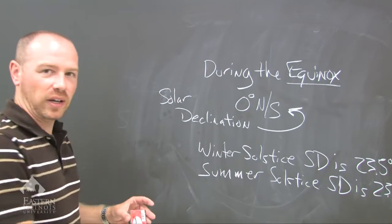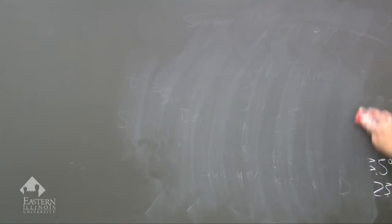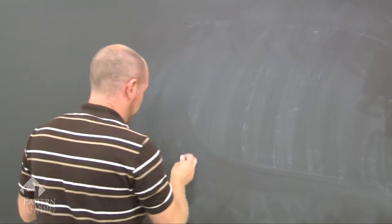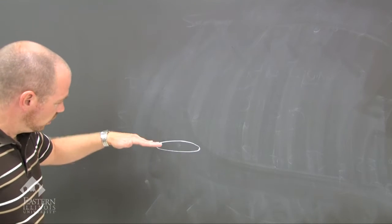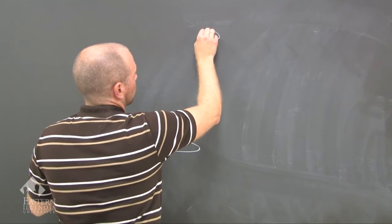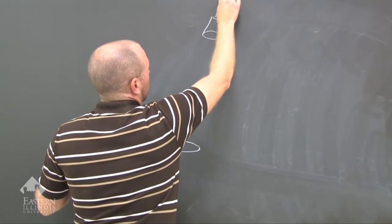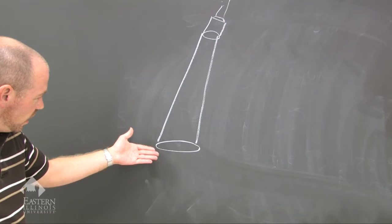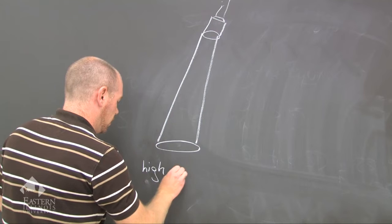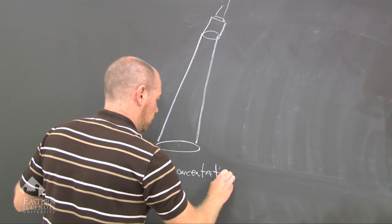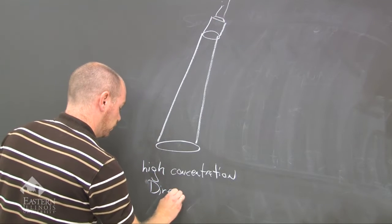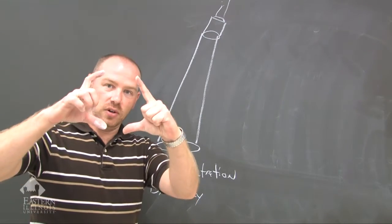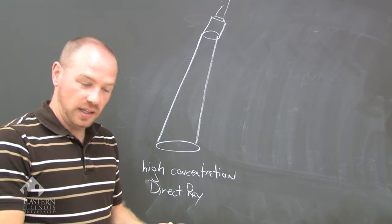Now let's talk about the direct ray of the Sun. The direct ray of the Sun is an intense beam of solar radiation. For example, here is light on the floor. When we take a flashlight and shine it directly on the floor in front of our feet, we get an intense beam. It is bright — there's a lot of energy, it has high concentration. This would be the direct ray of the Sun, like a flashlight pointed at the floor right in front of your feet, creating a perfect circle of bright, highly concentrated energy.